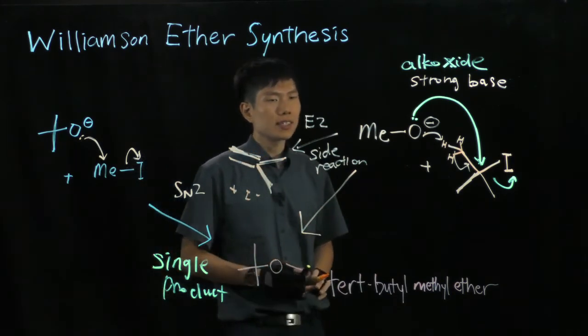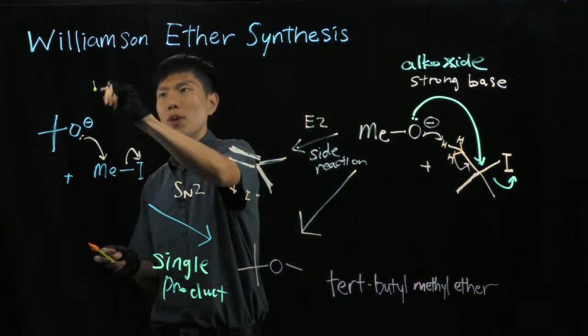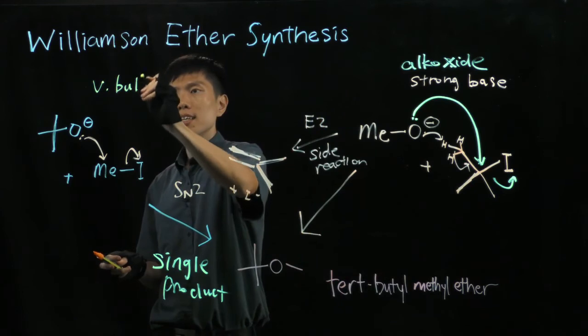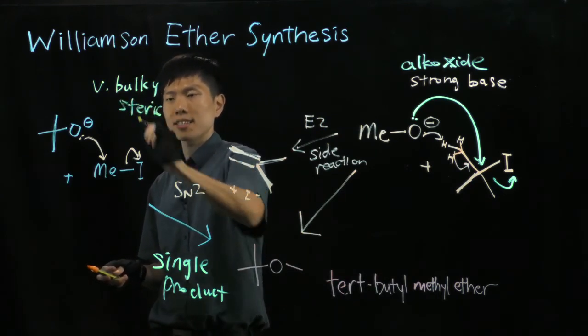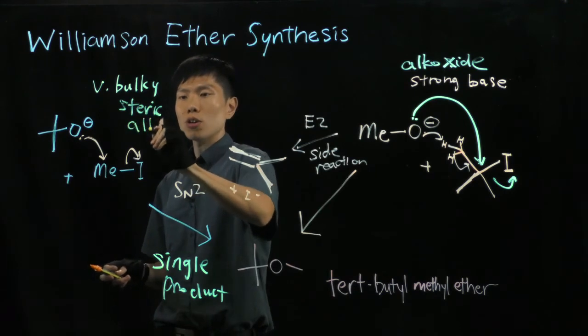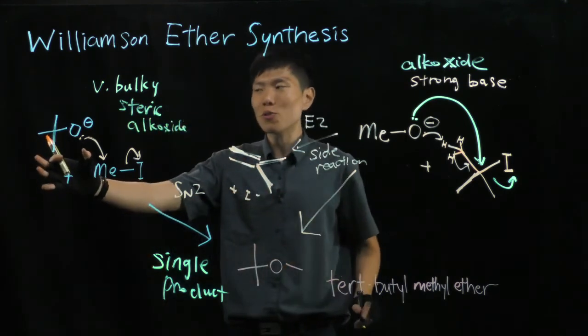So, by this virtue, we know that if you are given a choice to make an ether, try to use a very bulky and steric alkoxide. Like this, a tert-butoxide is very good, very bulky.